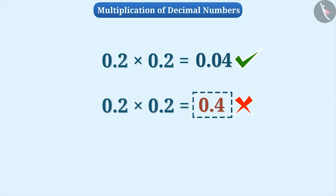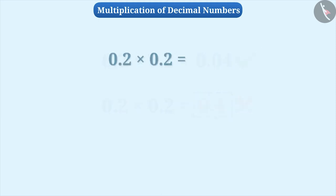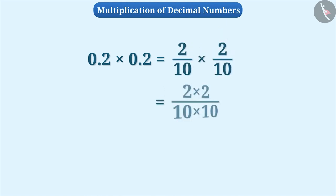In this way, we have obtained a method for multiplication of two decimal numbers where we represent the decimal numbers in the form of fractions and then multiply them and represent the answer in decimal form. That means 0.2 multiplied by 0.2 is equal to 0.04.